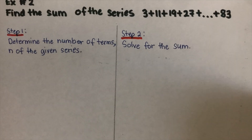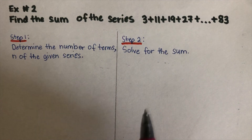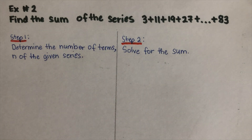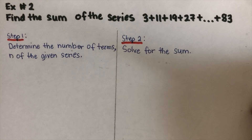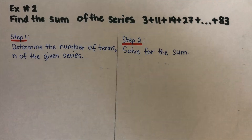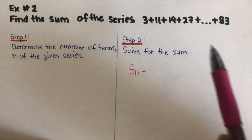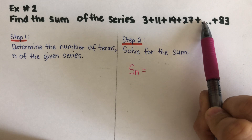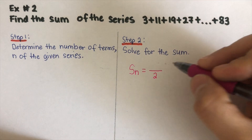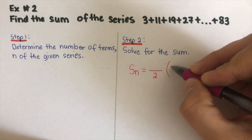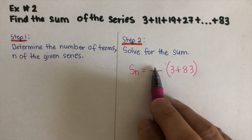The second example: find the sum of this series starting at 3, with some terms missing. There are two steps to solve this. Using the second equation, S of n equals n over 2 times (a1 plus a_n), I can count only four visible terms, so I don't know n — the total number of terms. I know the first term is 3 and the last term is 83, but n is unknown.